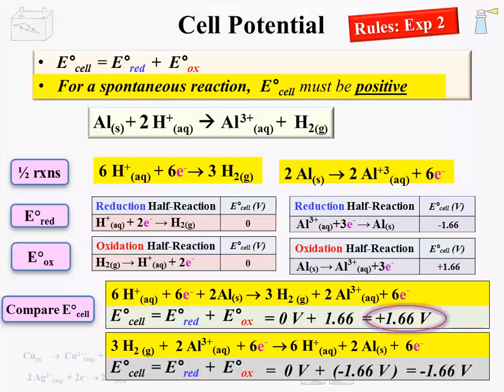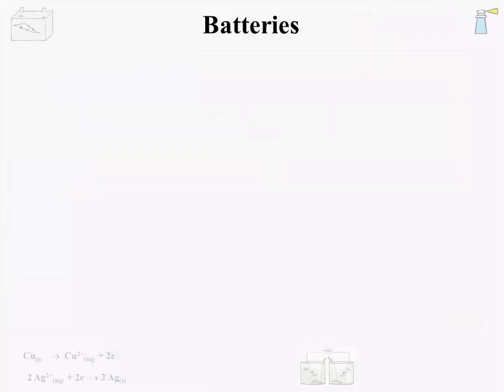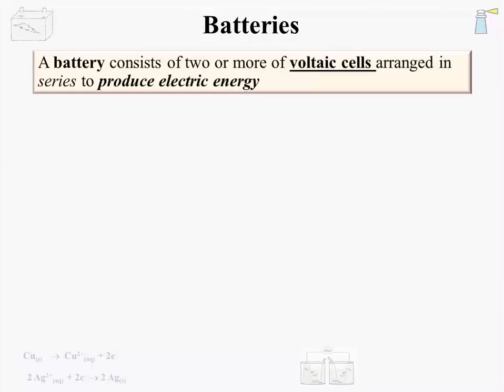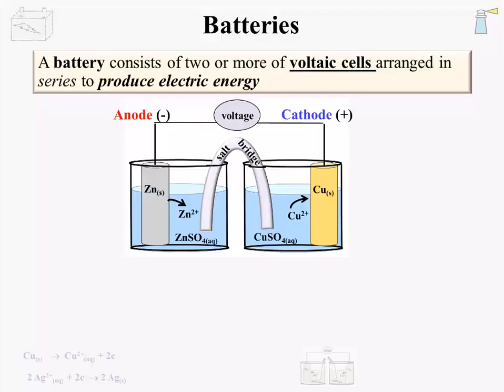When approached in a stepwise manner, getting the total EO cell of a reaction is a process that quickly becomes more comfortable. The next topic is a more familiar one: batteries. A battery consists of two or more voltaic cells arranged in series to produce electrical energy. Often they are based on the galvanic cell.